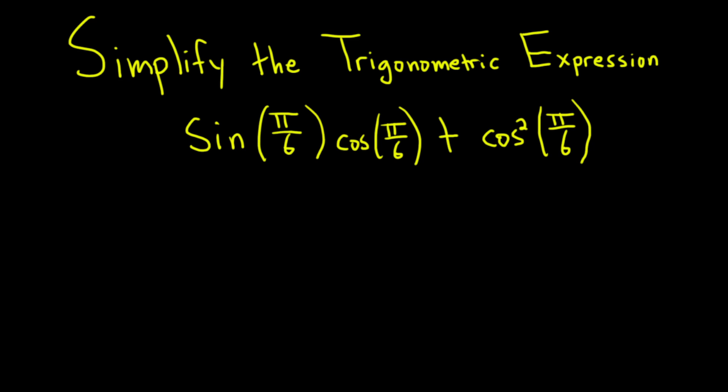In this video, we're going to do an example of simplifying a trigonometric expression. We're going to simplify sine of pi over 6 times cosine of pi over 6 plus the cosine squared of pi over 6. Let's go ahead and go through its solution.